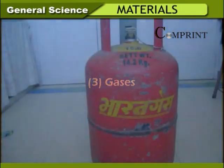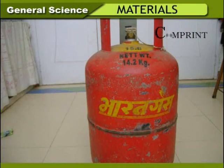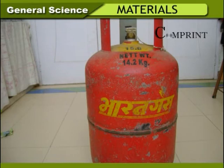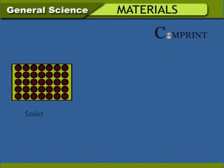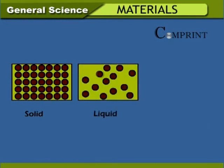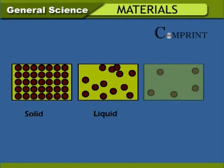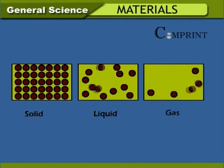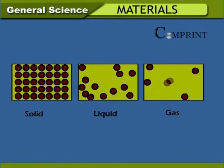Gases: Gas cylinders in our houses are filled with compressed gas. Molecules of gas in a balloon are also compressed because they are loosely arranged. The force of attraction between molecules is very less, which enables molecules to move irregularly — hence gases do not have a definite shape. Examples of gases are smoke, air, oxygen, and hydrogen.